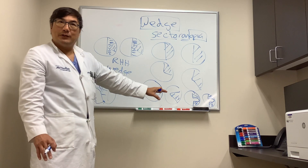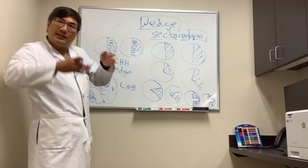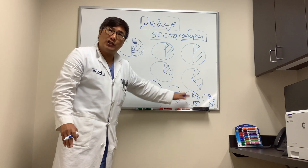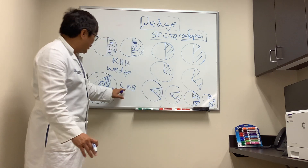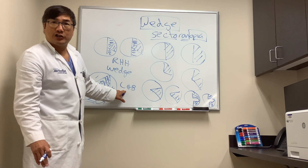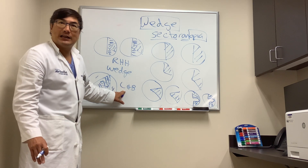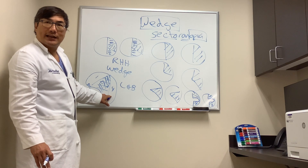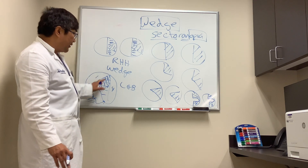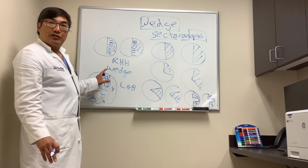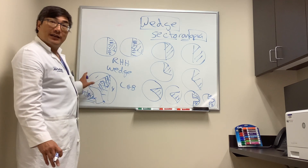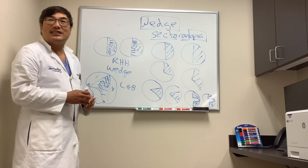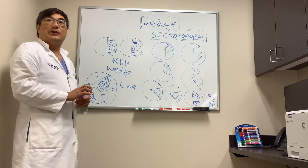A wedge sectoranopia looks like a wedge. It's a homonymous hemianopsia that doesn't respect the meridian — instead, the wedge goes to fixation. Involvement or sparing of that wedge in a homonymous hemianopsia suggests the problem is an infarction involving the lateral geniculate body. Because of the unique anatomy and blood supply of the geniculate, the wedge is either spared — anterior choroidal artery — or involved, producing a wedge sectoranopia homonymous hemianopsia.